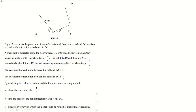Question number two. We have entry speed, angle alpha, and then angle beta. I talked about this in the 2020 paper. It's a show-that question, so if you just use the result tan β over tan α equals E directly, you'll get zero marks. You need to show where this comes from.